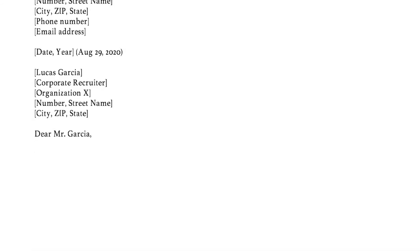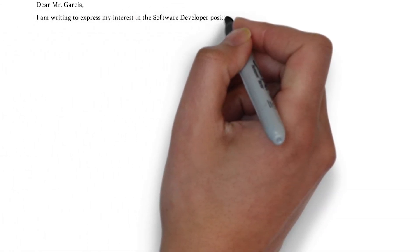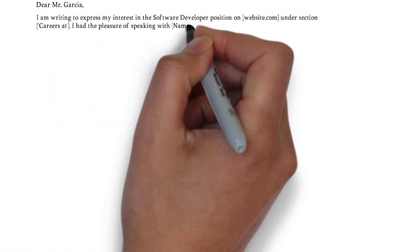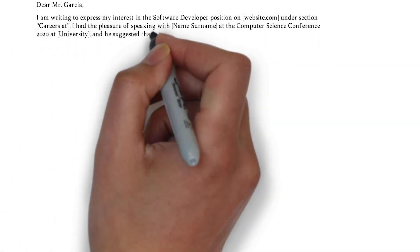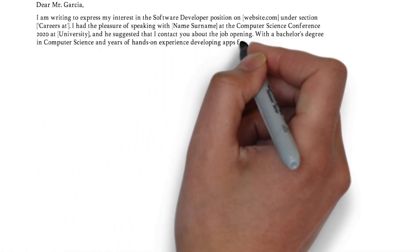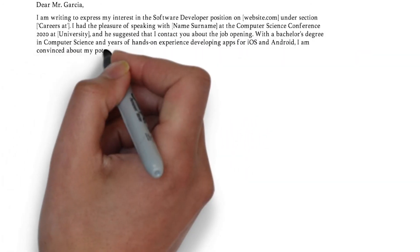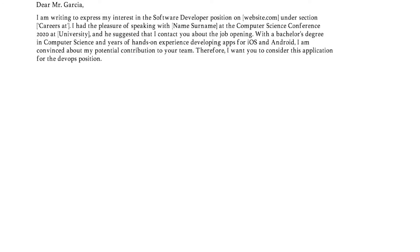In the first paragraph, also called the introduction, you need to start off by expressing your interest for the company and what roles you feel you thrive in. Make sure to grab the reader's attention. You can, for example, mention that you've been referred by a mutual connection, or mention something newsworthy that sparked your interest.